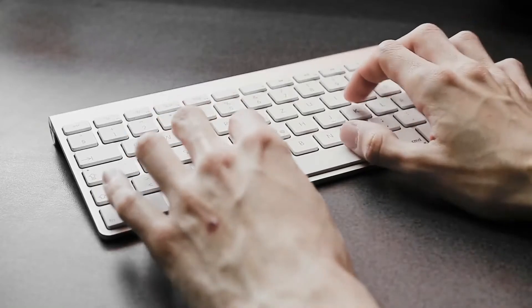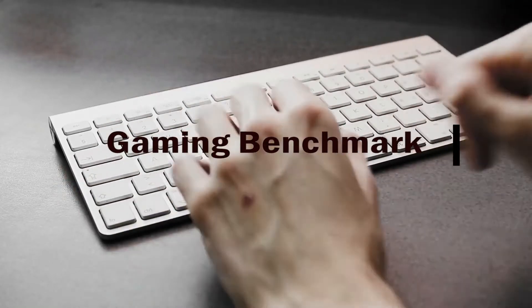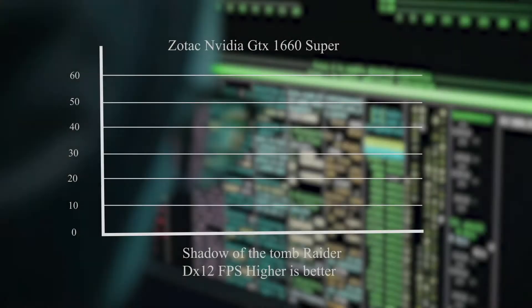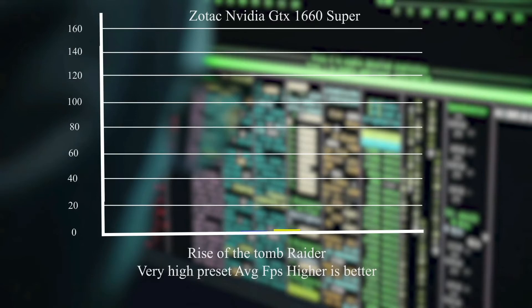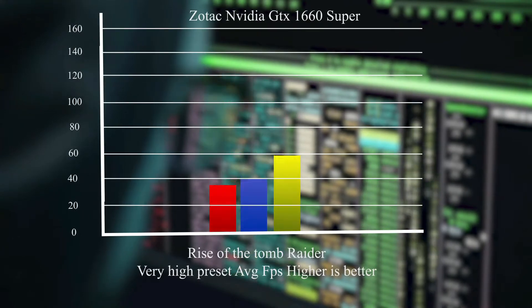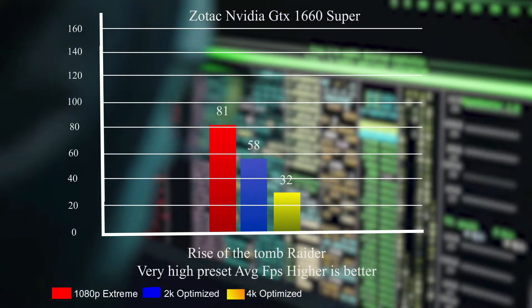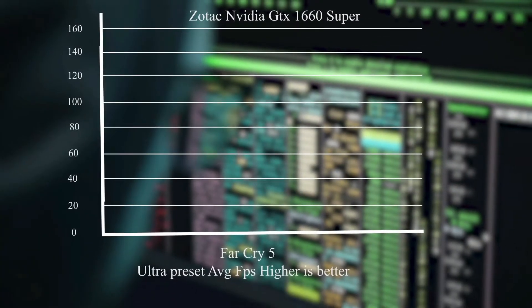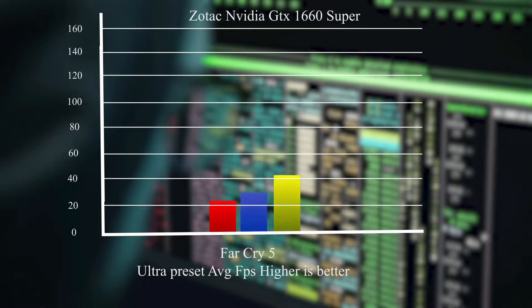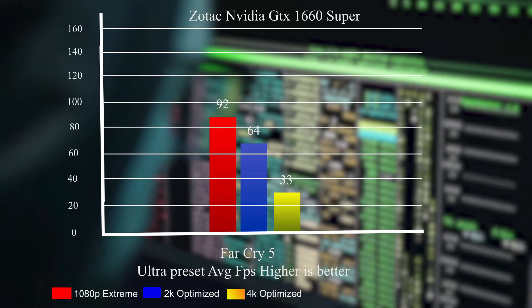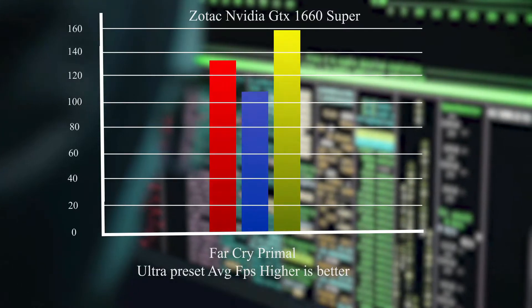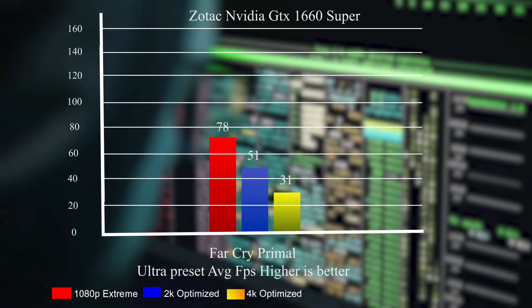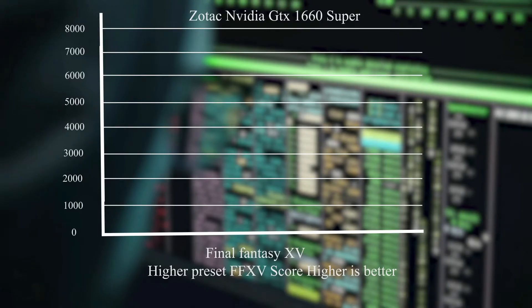Now let's jump towards the gaming benchmarks. In Shadow of the Tomb Raider, this card gives a playable 35 FPS on 1080p Extreme. In Rise of the Tomb Raider on a very high preset, it achieves 81 FPS on 1080p and 58 FPS on 2K — definitely very playable. In Far Cry 5 Ultra preset, the average FPS is 92 on 1080p and 64 on 2K. On Far Cry Primal, it gives around 78 FPS on 1080p and 51 on 2K.